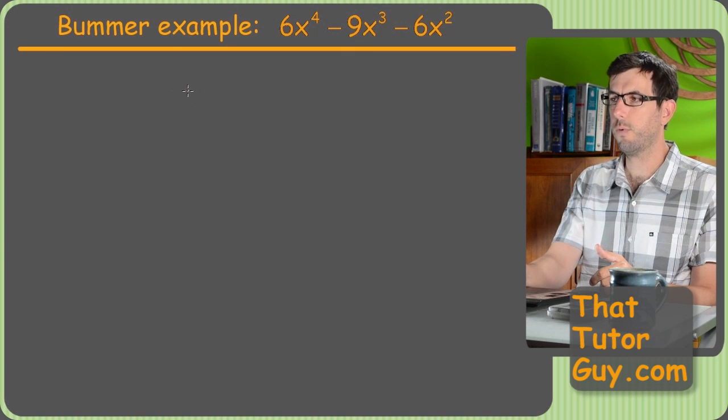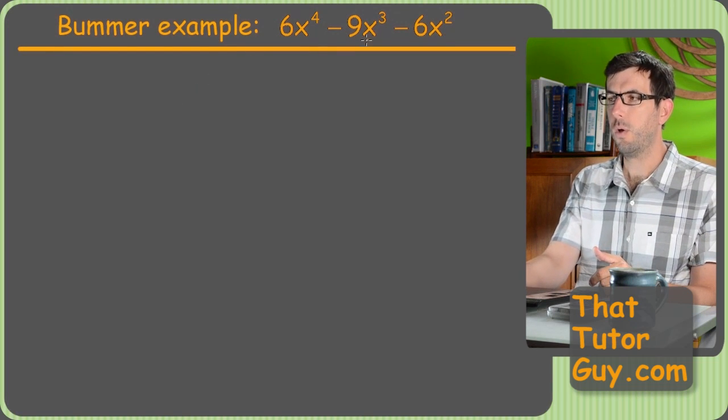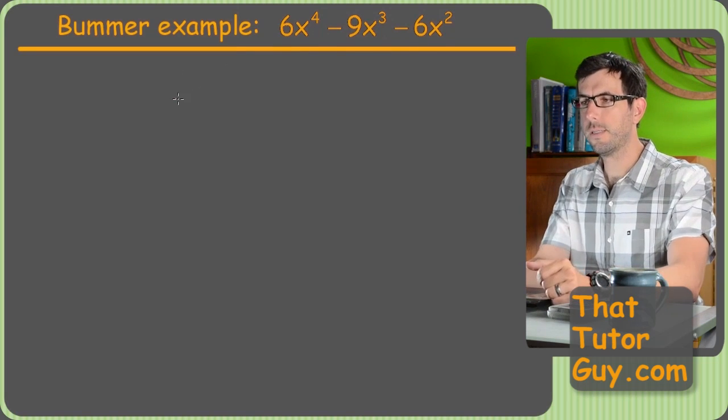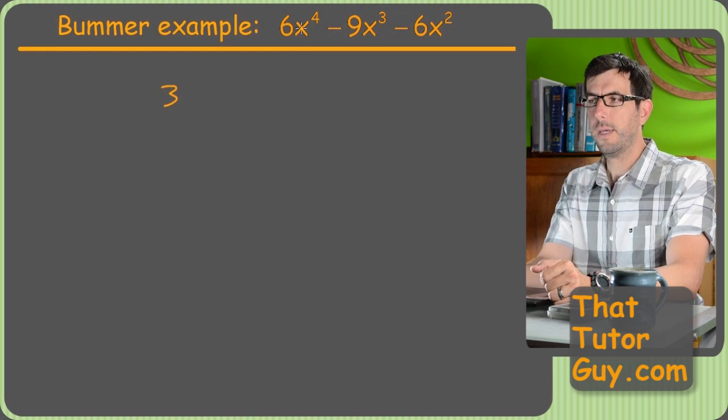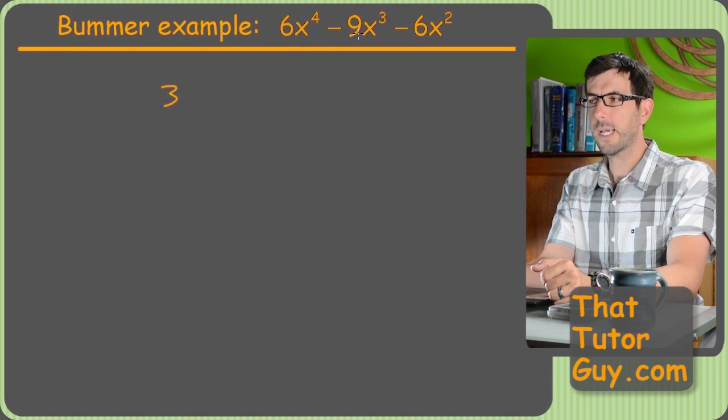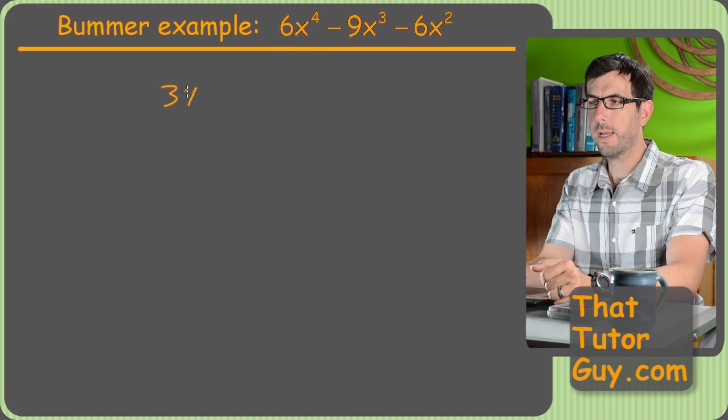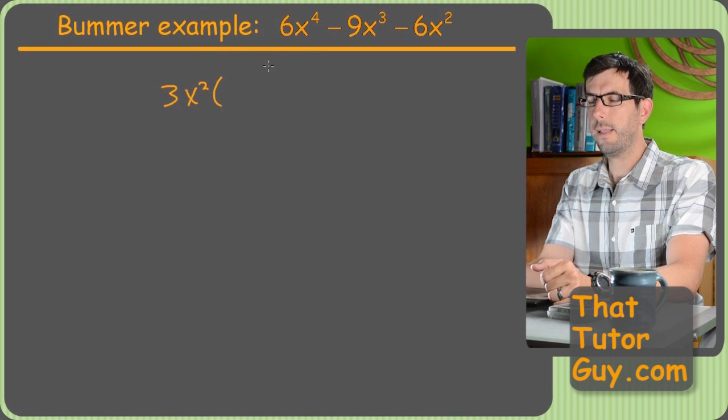What can I factor out of this? Well, for starters, everything's divisible by 3. So let's draw 3 out. There's actually too many x's as well. The lowest power of x I see is x squared. So I'm going to be able to pull out an x squared. And that'll leave me. So what do I have to multiply 3x squared by? By it, I get 6x to the fourth. I have to multiply it by 2x squared.